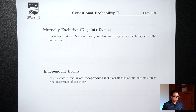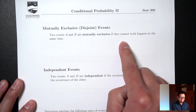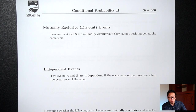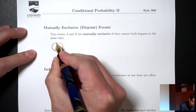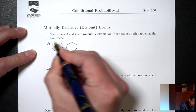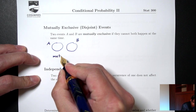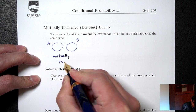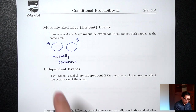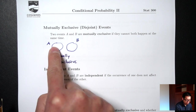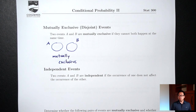We'll start today by introducing two ideas. The first is mutually exclusive. Two events A and B are mutually exclusive if they cannot both happen at the same time. Visually, I can represent this with two circles that don't overlap. That's a representation of mutually exclusive because you cannot be in both circles at the same time. If you're in circle A, then definitely you are not in circle B, and vice versa. So these two events mutually exclude each other from happening.